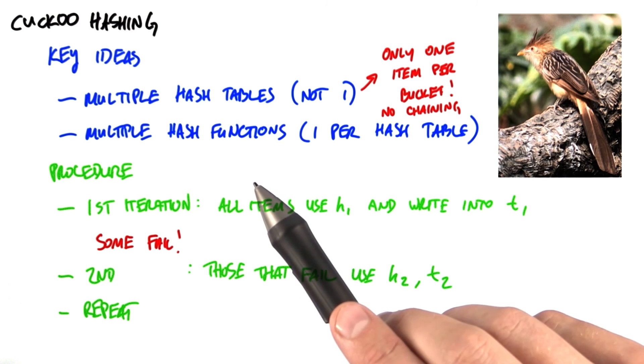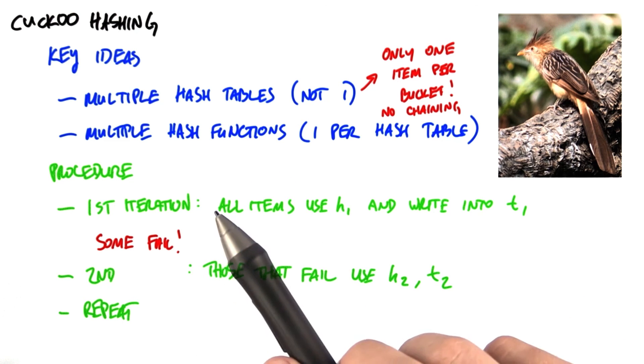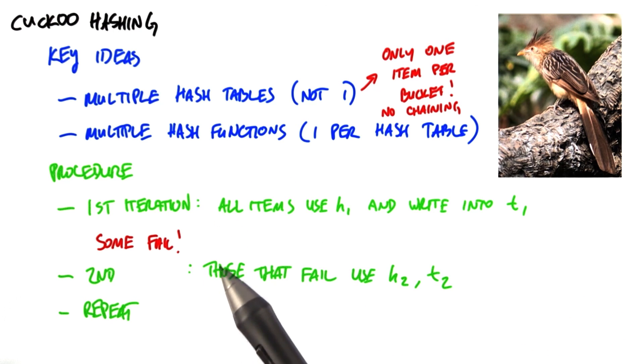Now, the cool part is what happens next. But we're going to go take an example here, and I'm going to show you how it works, and then we'll see exactly how this cuckoo hashing works.